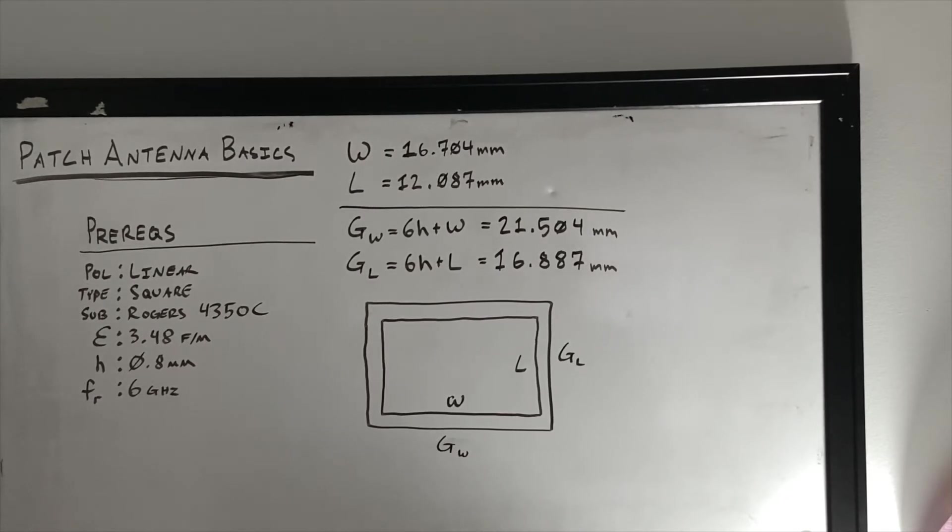Now, you might be wondering, Ryan, why can't the patch and the ground dimensions be the same? Well, I'm glad you asked. And that's because microstrip patches assume that it has an infinite ground return path. And if you've ever seen an antenna, they don't have an infinitely big ground plane. So we have derived six times the substrate height divided by two on either side to be plenty for it to maintain its performance, but also have a good return path.